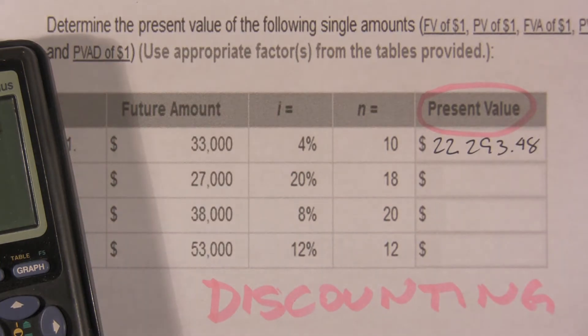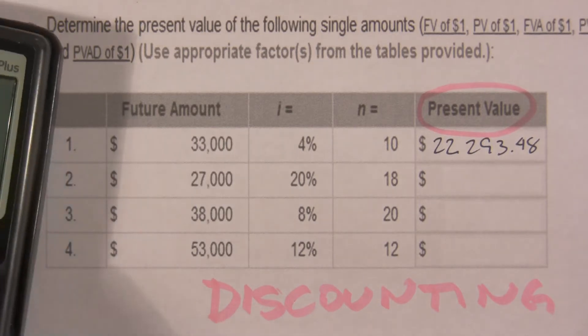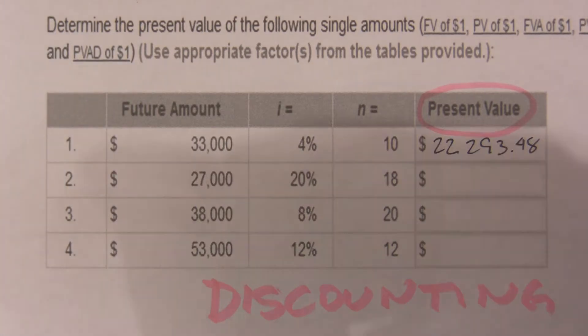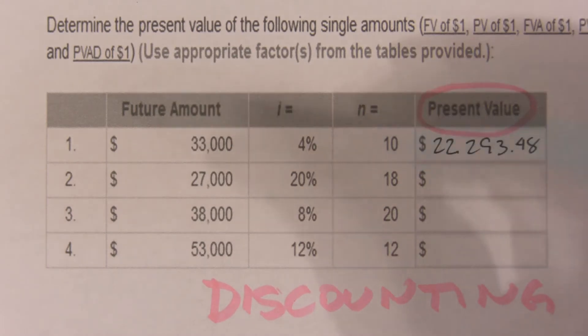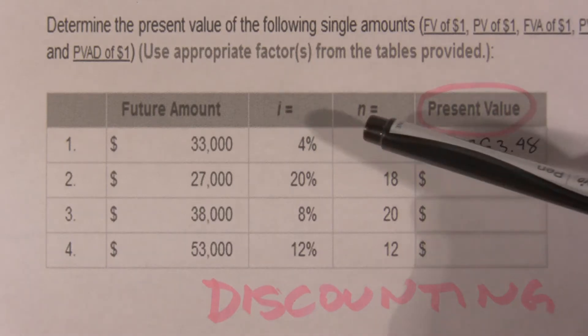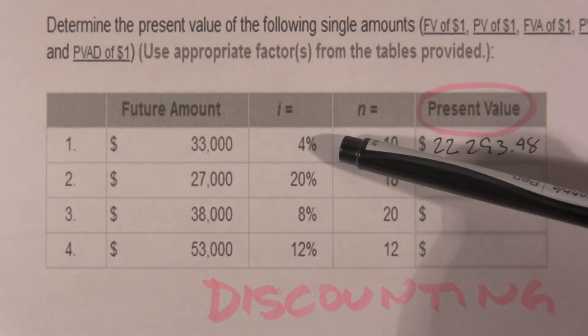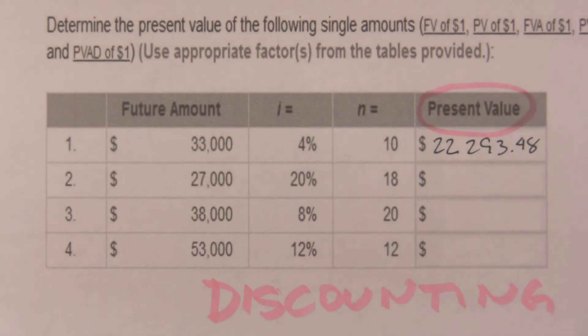In other words, we're answering this question. If we need $33,000 10 periods from now, 10 years, 10 quarters, whatever, however it's compounded, if we can get 4% interest, how much do we need to put in the bank now?